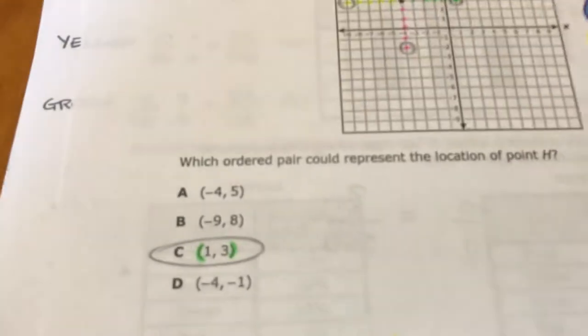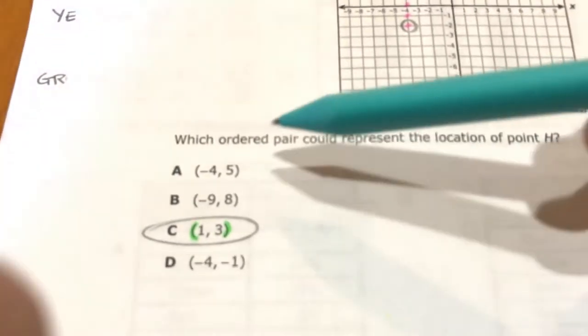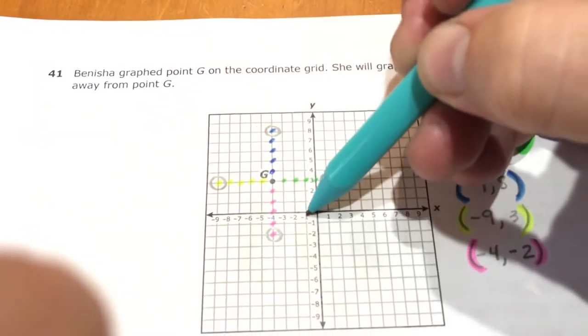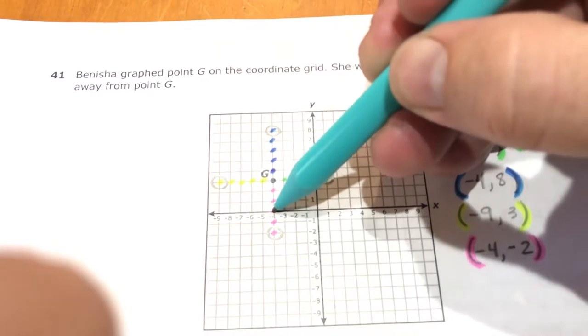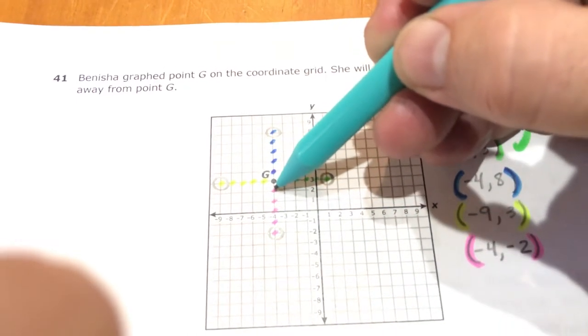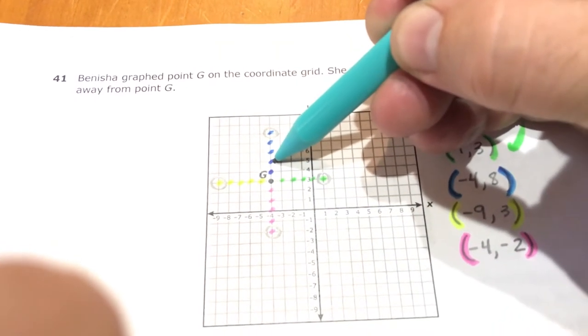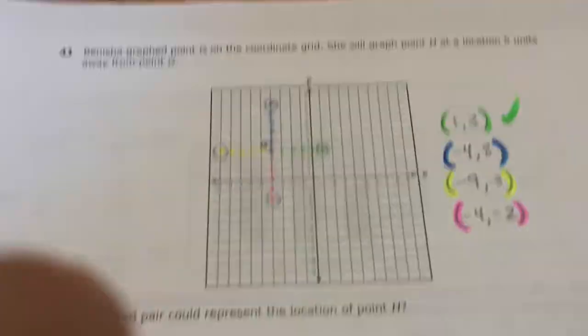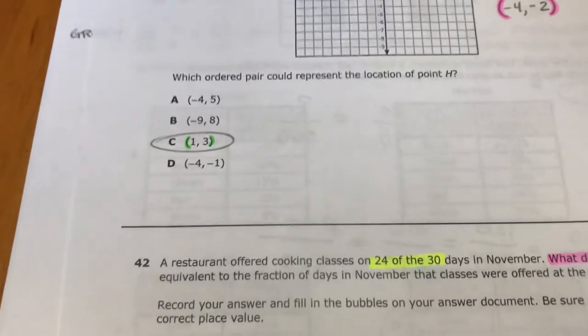For example, negative 4, positive 5. So here's the origin, negative 1, 2, 3, 4, positive 5, 1, 2, 3, 4, 5. So that's not five units away from G, that's only two units away from G. And if you did the rest you would find the same, they don't work.